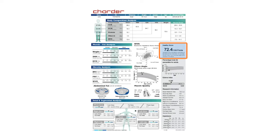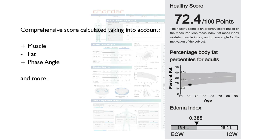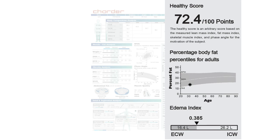The health score is calculated using a combination of all the different results on this report, including cellular health, muscle mass, body fat, and more. Generally speaking, you will score higher if you keep your body fat within normal range, and will score lower if your body fat is too high.